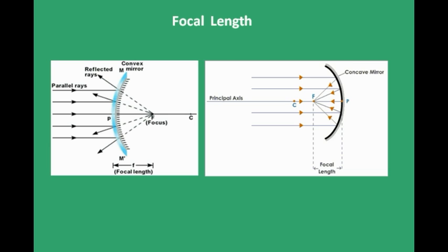When you throw a beam of paraxial rays onto a concave mirror, they intersect at a point after reflection — this point is known as the focus. For a convex mirror, the reflected rays don't actually intersect, but when extended backwards they appear to intersect at a point, which is the focus. The distance between the pole and the focus is known as the focal length.